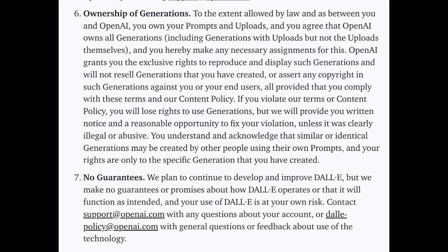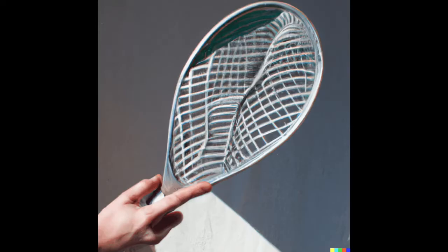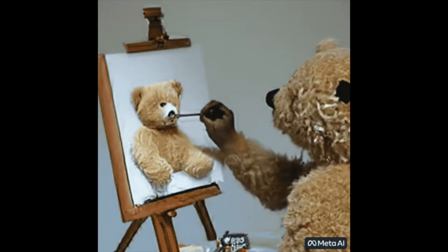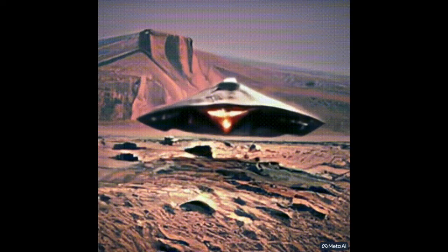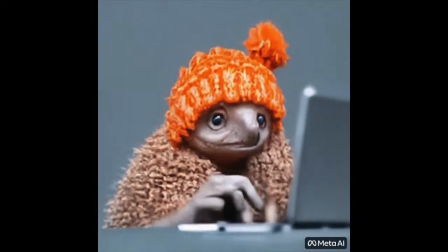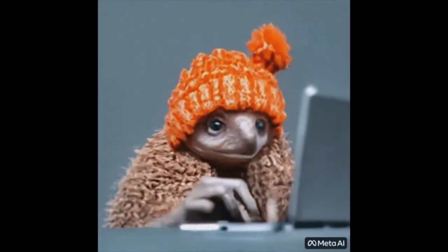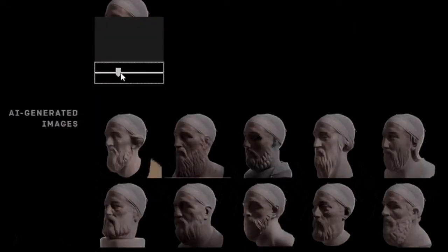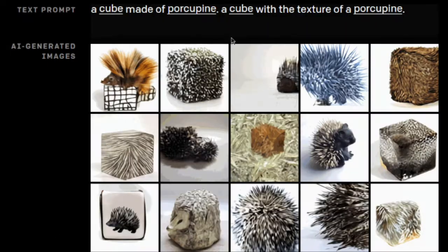I want to touch on Meta's text-to-video AI generator. This takes AI-generated image content and bumps it up a level where you're creating quick-form videos based on text. Mark Zuckerberg displayed the capabilities of the program by showing a teddy bear painting a self-portrait, a spaceship landing on Mars, and a baby sloth with a knitted hat trying to figure out a laptop. All of these videos were generated via text prompts that the AI machine then turns into a moving video, thanks to deep learning and image synthesizers such as GPT-3 and LAION-5B.